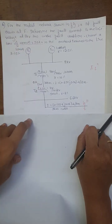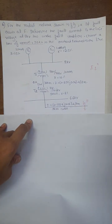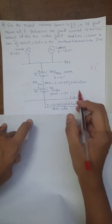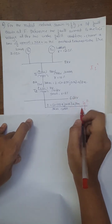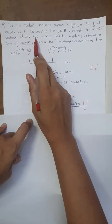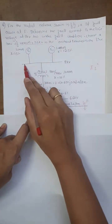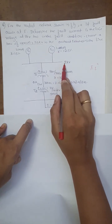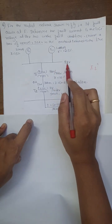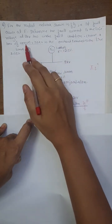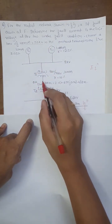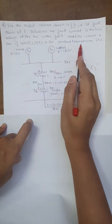We have a radial network as shown in the figure. A three-phase fault occurs at point F, over a three-kilometer cable. You need to find the fault current If double-dash, and the line voltage at the 11 kilovolt bus under fault condition. The base to consider is 100 MVA and 33 kilovolt in the overhead transmission line.